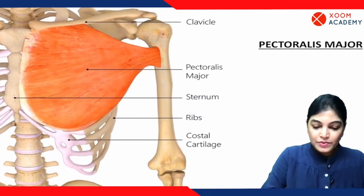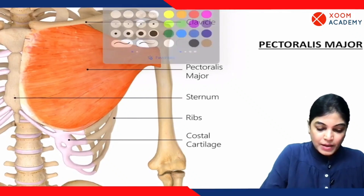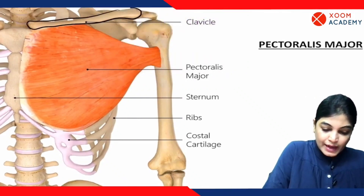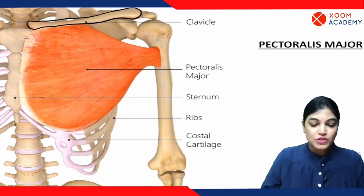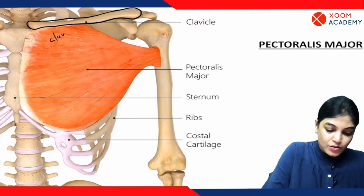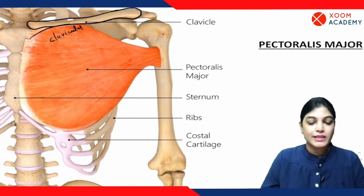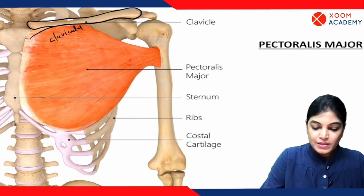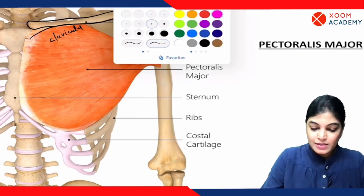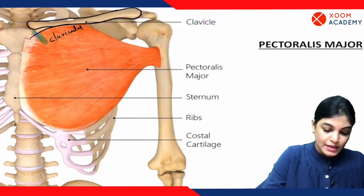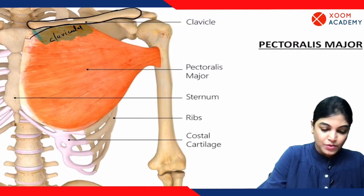In this diagram I am going to outline the clavicle — this is the collar bone or the clavicle bone. What you can appreciate is that this is the clavicular part of the pectoralis major muscle — this is the clavicular head. The clavicular part of pectoralis major muscle is arising from the medial anterior aspect of the clavicle.